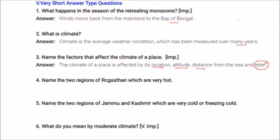The two regions of Rajasthan which are very hot are Jaisalmer and Bikaner. The two regions of Jammu and Kashmir which are very cold — freezing cold — are Dras and Kargil.